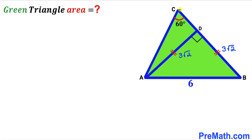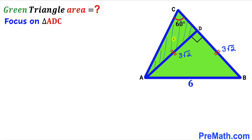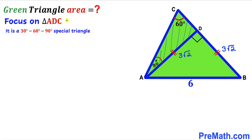Now our task is to find segment CD. Focusing on right triangle ADC, we see angle ADC is 90 degrees and angle ACD is 60 degrees, so the remaining angle must be 30 degrees. Therefore, triangle ADC is a special 30-60-90 triangle.